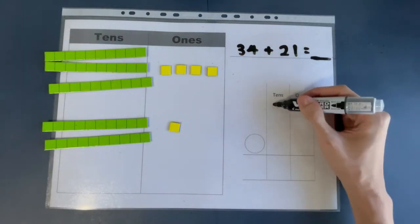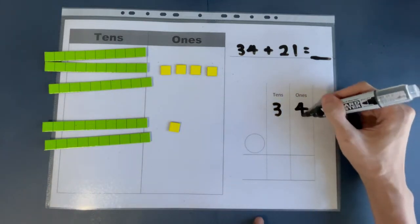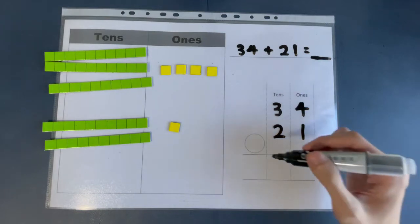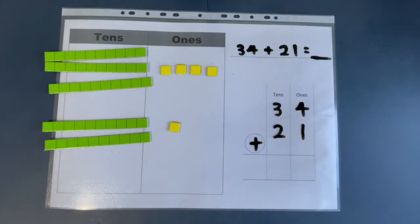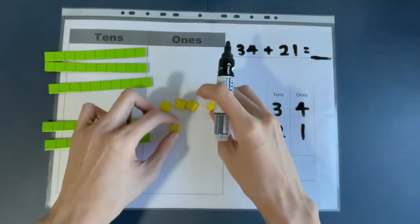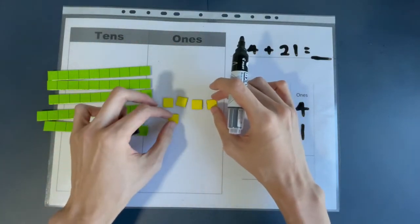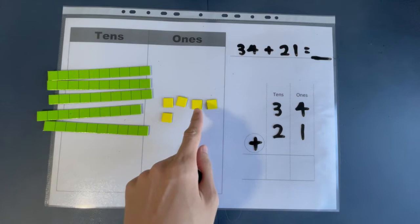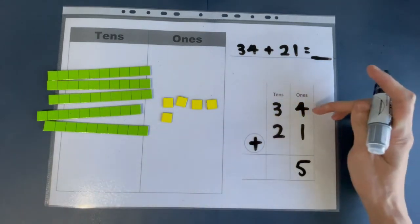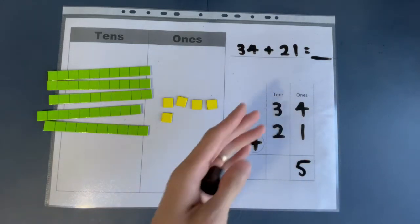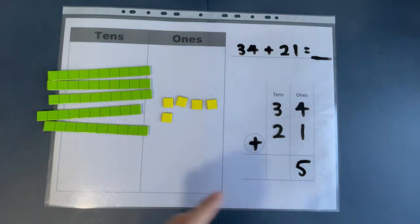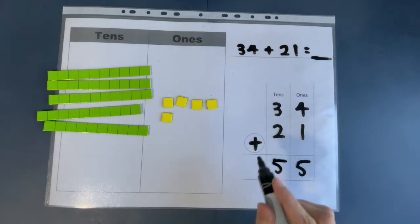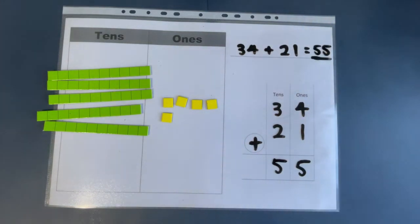How many tens are there? Three. How many ones are there? Four. How many tens are there? Two. How many ones are there? One. And what are we doing with these two numbers? We are adding them together — plus. So what do we do? Put everything together and count what is the total. Let's start with our ones: one, two, three, four, five — there are five ones. Four ones plus one one gives you five. And how many tens are there? One, two, three, four, five tens. Three tens plus two tens gives you five tens. So 34 plus 21 gives you 55, and that is the answer.